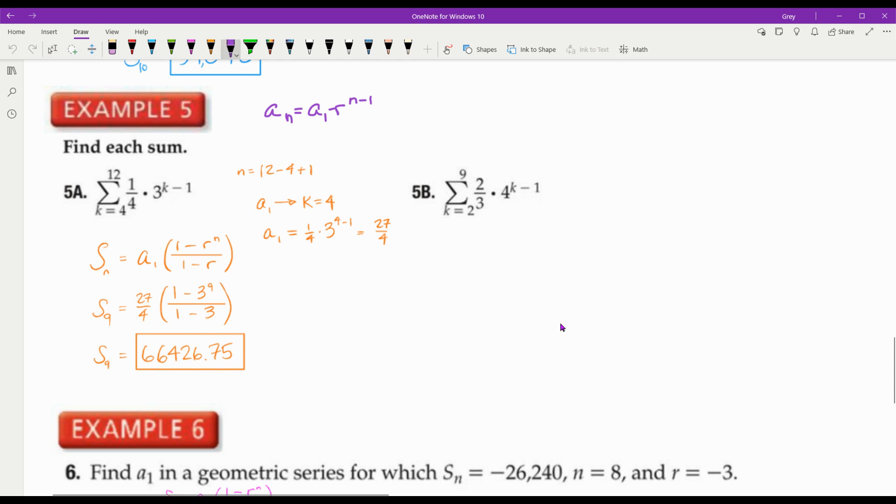One more sum. This time we have the sum as k equals 2 to 9 of 2 thirds times 4 to the k minus 1. Again, this looks very similar to that. We talked about how the arithmetic one looks linear in that form. So if you can recognize that, then you can use these formulas. But if it's not arithmetic or geometric, you can't use these formulas. You just have to write out the terms and add them up. So, again, S sub n. How do you learn the formulas? Write them down every time you do a problem. S sub n equals A sub 1 times 1 minus r to the n over 1 minus r. What is n? n is 9 minus 2 plus 1, which is 8. So I'm looking for S sub 8. A sub 1 is when k is equal to 2. So that's A sub 1 is equal to 2 thirds times 4 to the 2 minus 1, and that becomes 8 thirds. So I got 8 thirds from my first term.